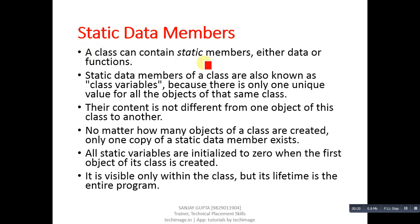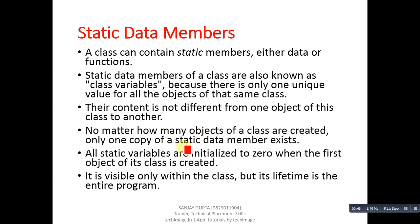A class can contain static members, either data or functions. Static data members of a class are also known as class variables because there is only one unique value for all the objects of that same class. Their content is not different from one object to another. No matter how many objects of a class are created, only one copy of a static data member exists — all objects share that particular copy.